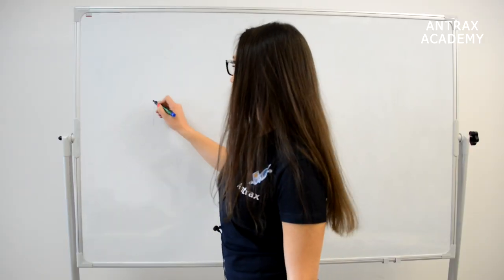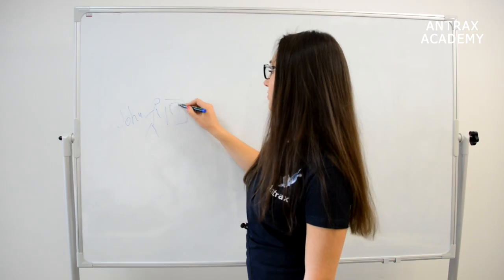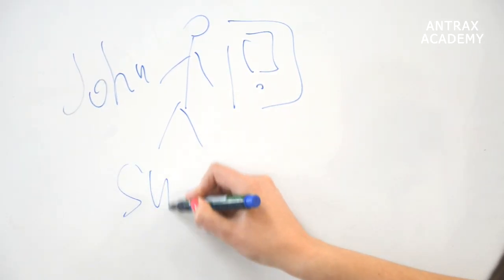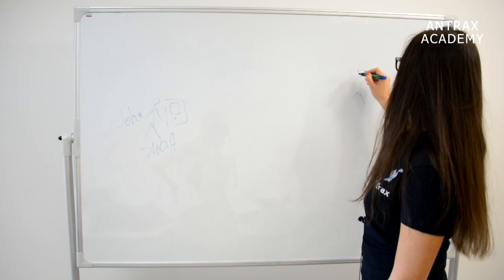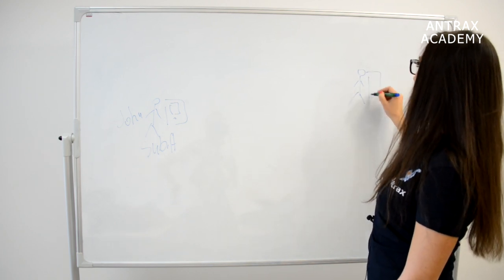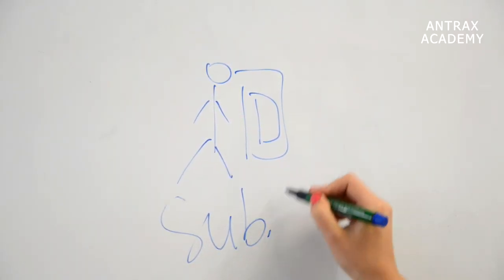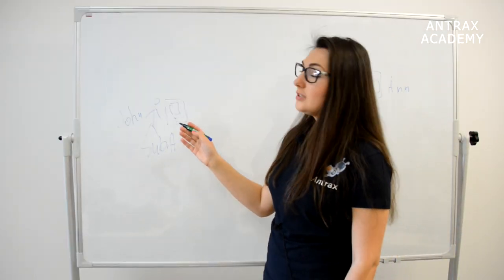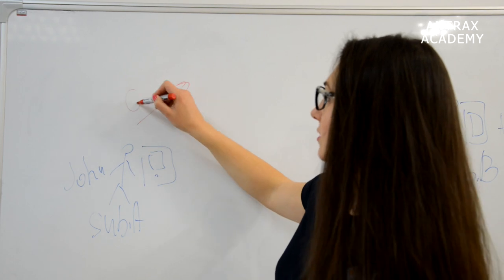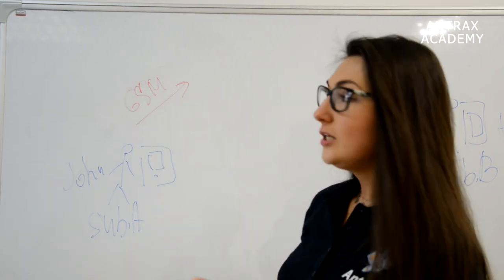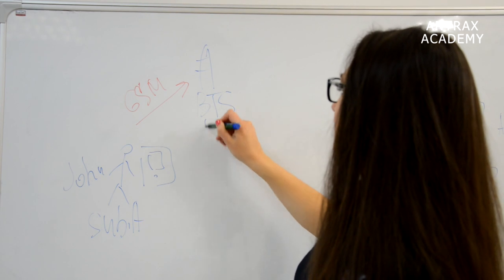Here we have John who wants to make a call. He has a mobile telephone and a SIM card of an operator A, so he is subscriber A. He wants to make a call to his girlfriend Anne, who has a mobile telephone and a SIM card of operator B, so she is subscriber B. After John dials the number, the signal goes in GSM format — basically a wave — to the antenna of operator A, which we also call the BTS of operator A.